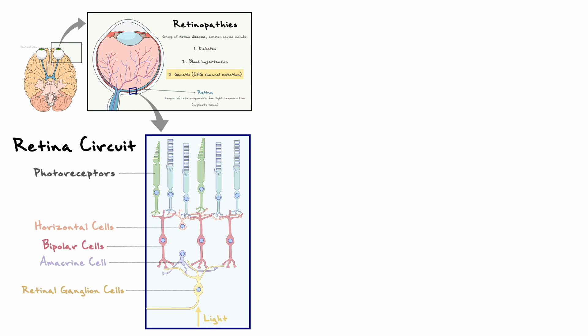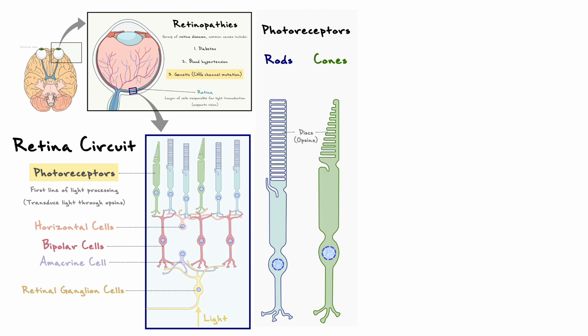The cells of interest for us are the photoreceptors, and generally speaking, they represent the first line of light processing. Photoreceptors come in two flavors, rods and cones, and the two are morphologically and functionally distinct from each other. Due to certain properties and opsins that we will not explore in depth in this video, rods are specialized for night vision, and cones for daylight and color vision.